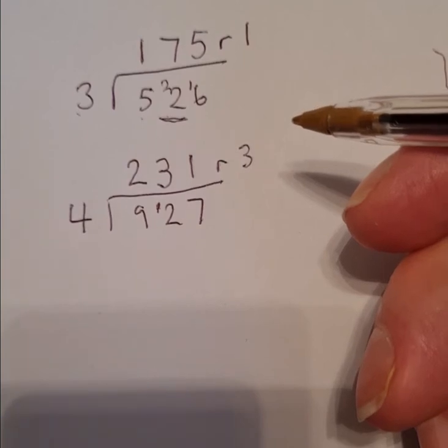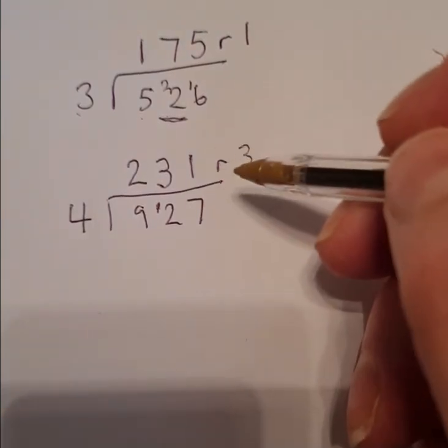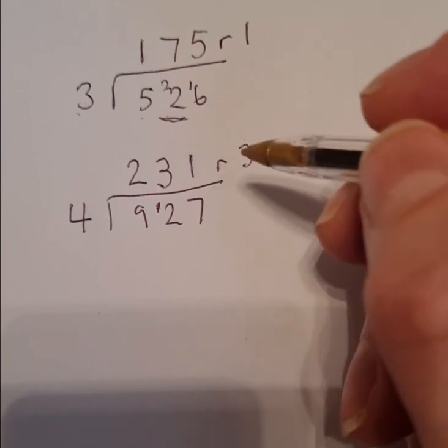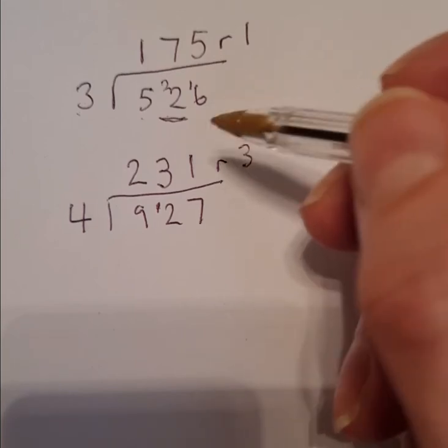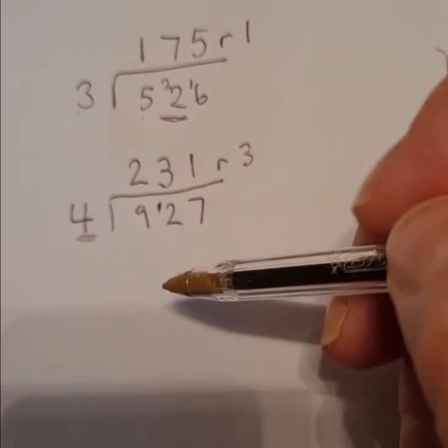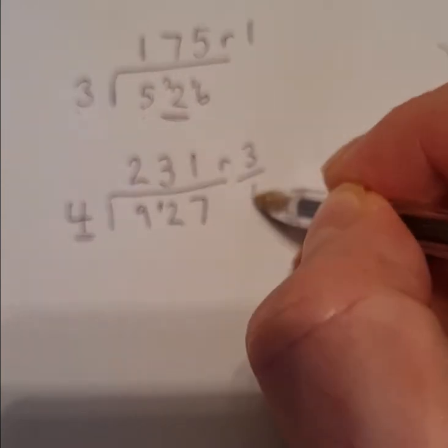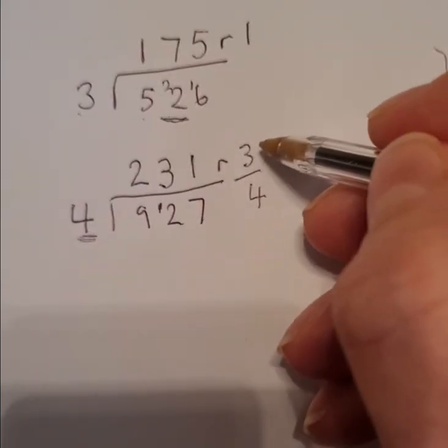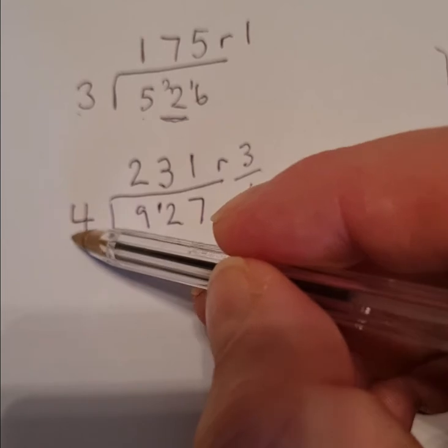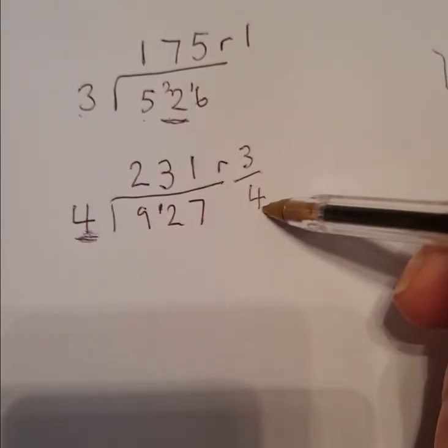But this time we're going to do something with the remainder. It isn't just 3 because it's not 3 whole ones. It is 3 remaining after we've divided by 4. So it's 3 lots of 4. So the remainder is a numerator.